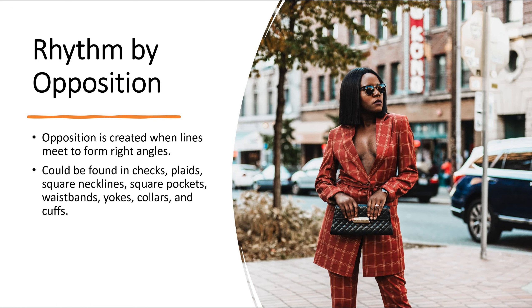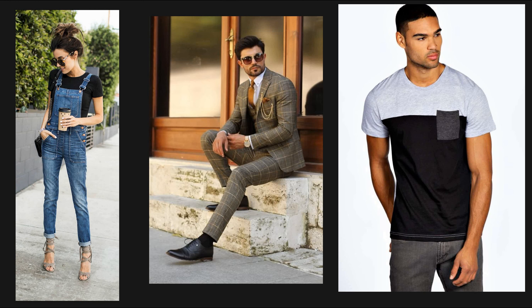Rhythm by opposition is created when lines meet to form right angles. It can be found in checks, plaids, square necklines, square pockets, waistbands, yokes, collars, and cuffs — basically think of a straight line. Here we see it in a plaid suit, and on the left in the overalls with the square neckline, square pockets, square waistband, and cuffed pants. In the middle is the plaid suit, and on the end a t-shirt with a line cutting from gray to black and a square pocket.